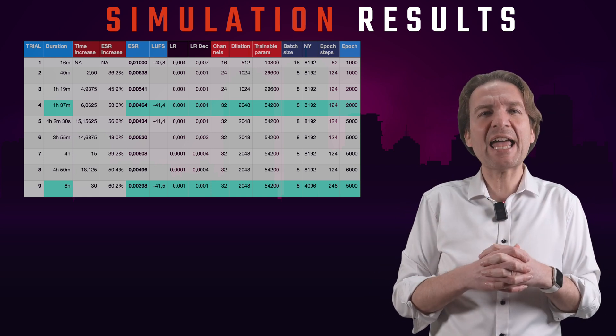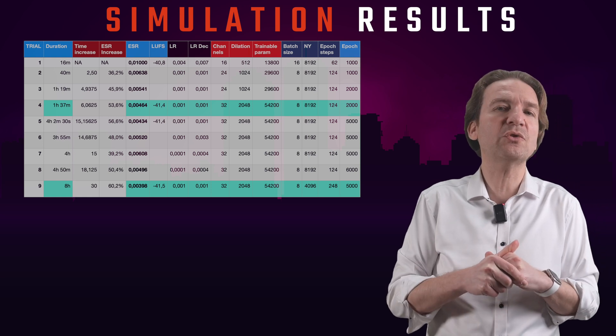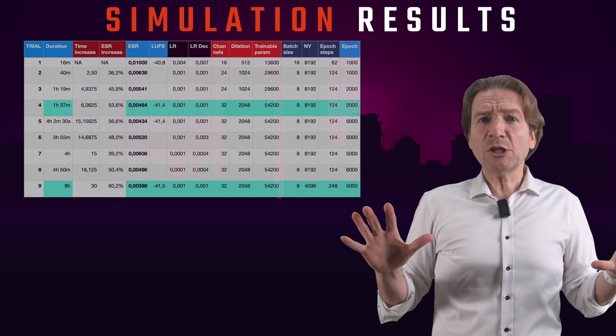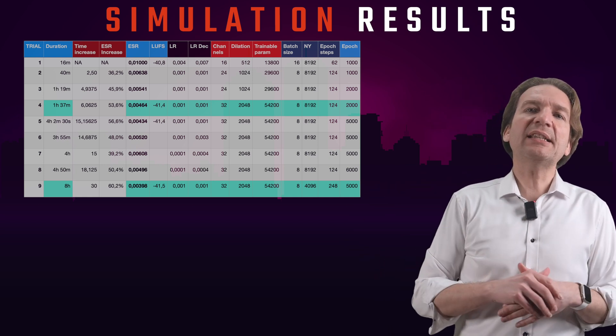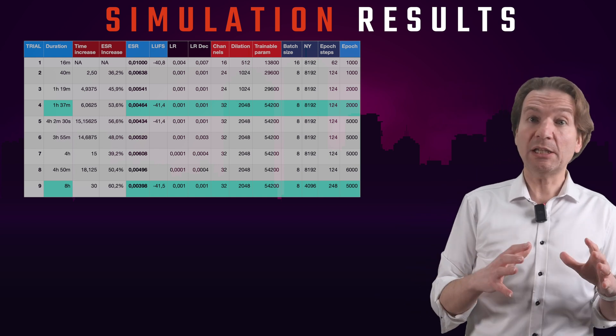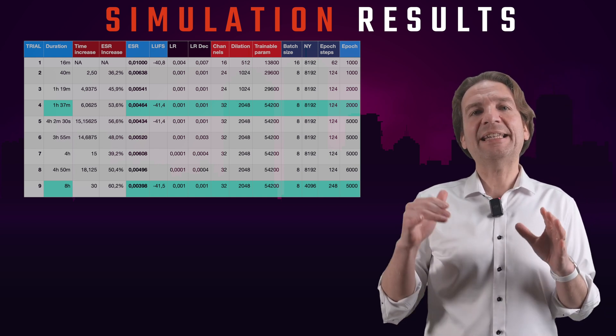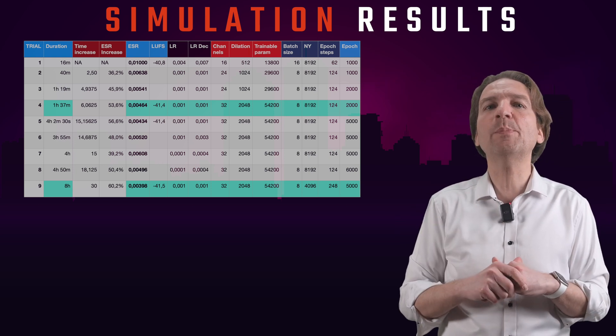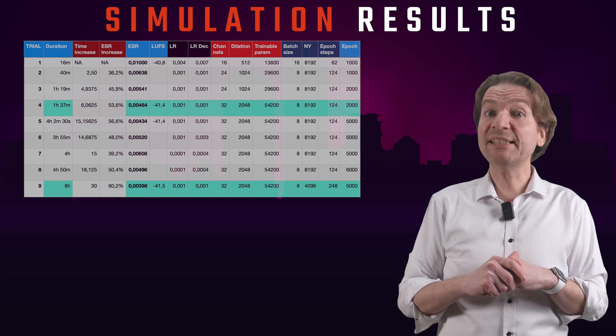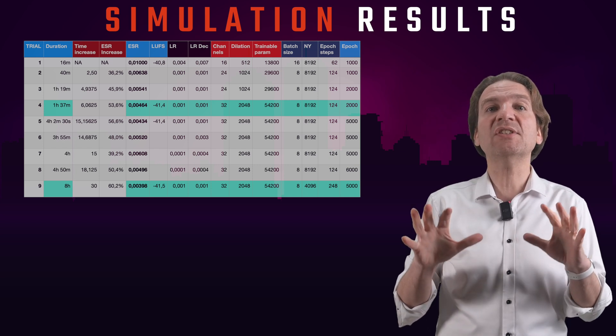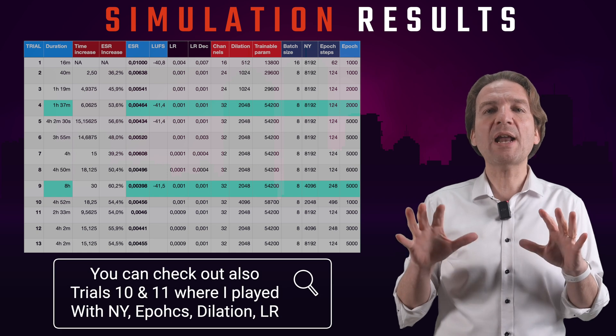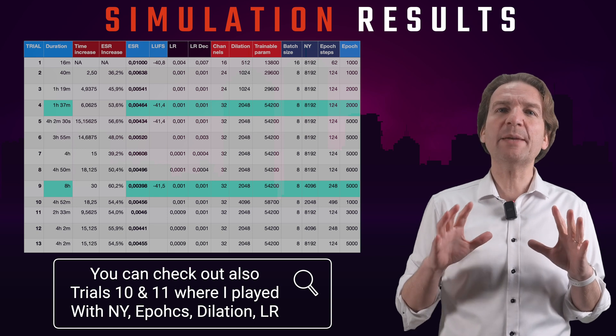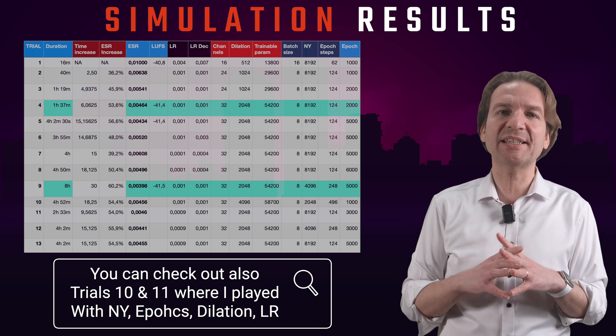Increasing the computational time by 30 times compared to our previous tests. Let's now check out my trial number 12 and 13. They are equal, but I have used 4096 NY with 3000 epochs for the trial 12, and 8192 NY with 5000 epochs for the trial 13. Well, basically the computational time is equal, both requiring 4 hours and 2 minutes.